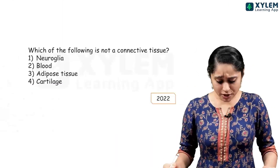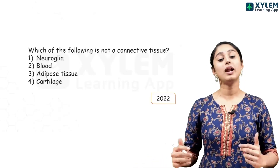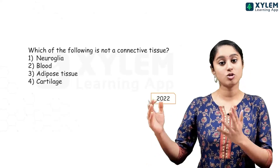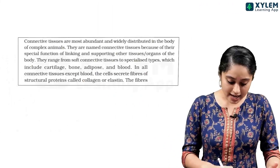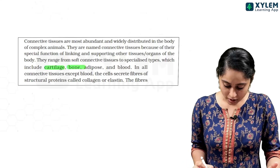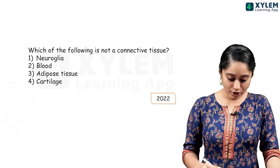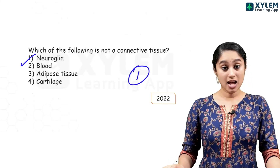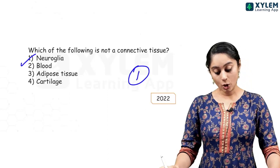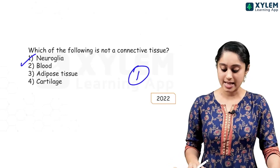Next question: which of the following is NOT a connective tissue? When we talk about connective tissue, we know different types — loose connective tissue, dense connective tissue, and specialized tissue. The options include cartilage, bone, blood, and adipose tissue. Neuroglia is a nervous cell, not a connective tissue. So neuroglia is the answer.